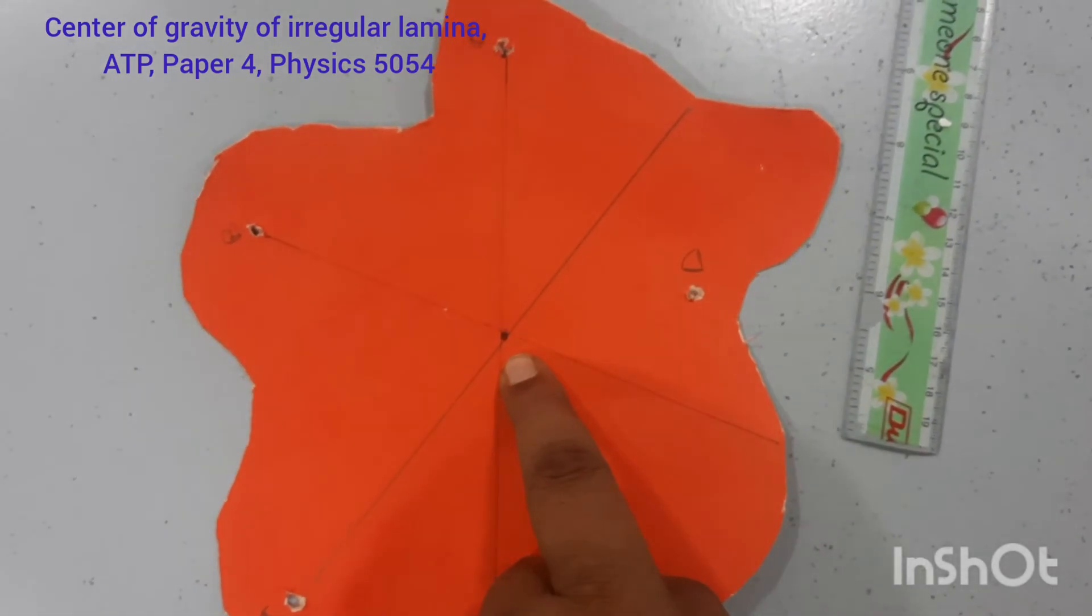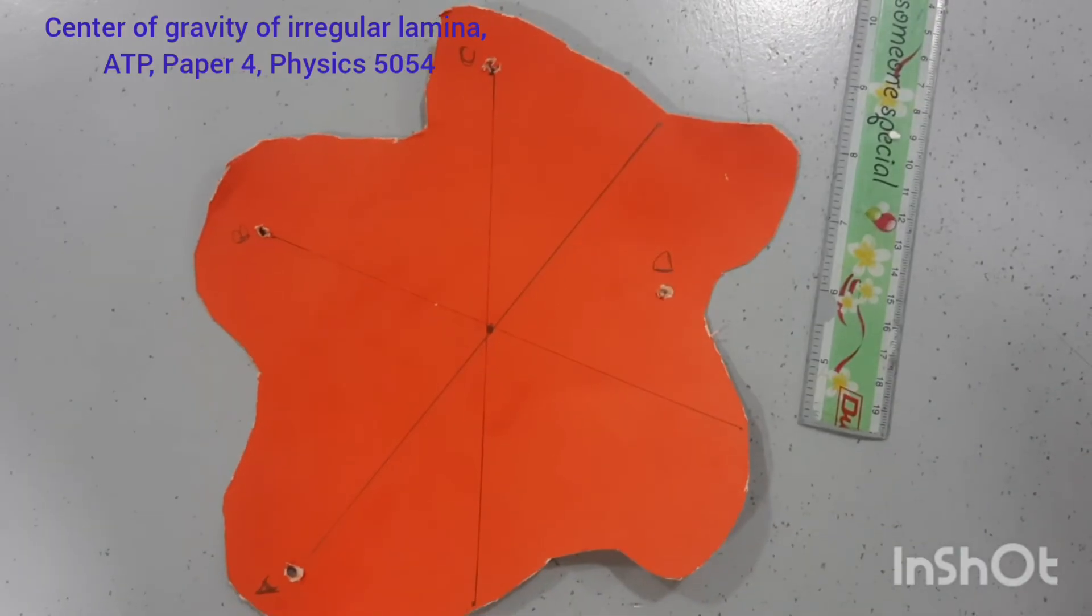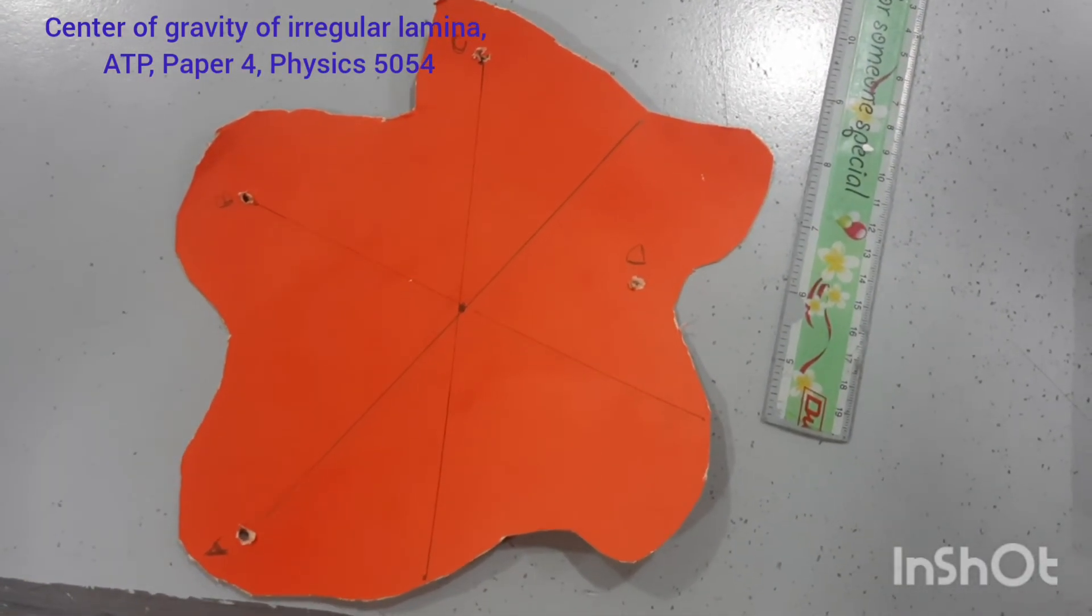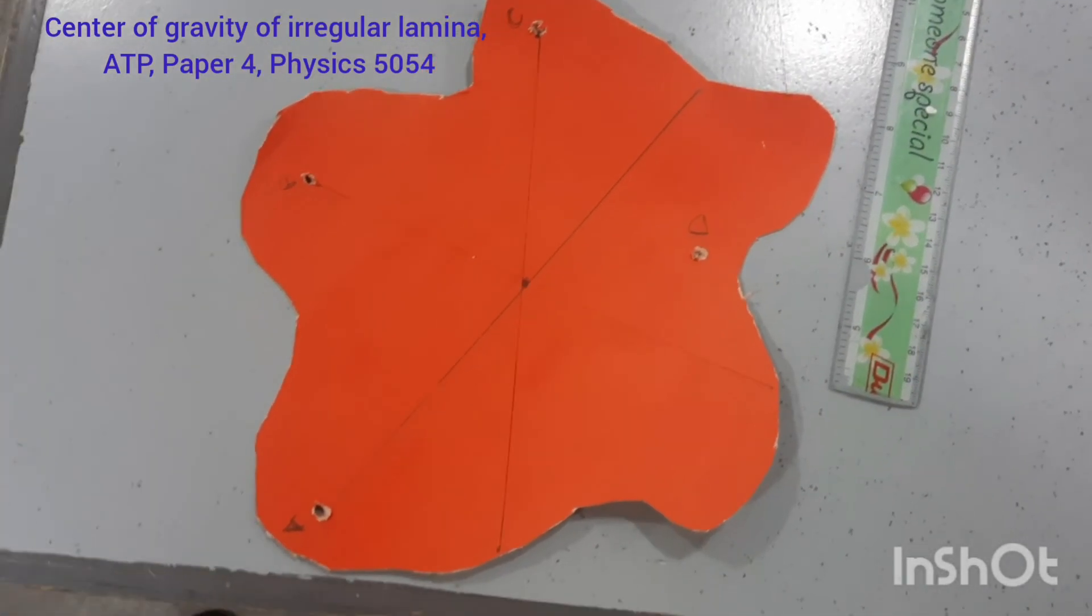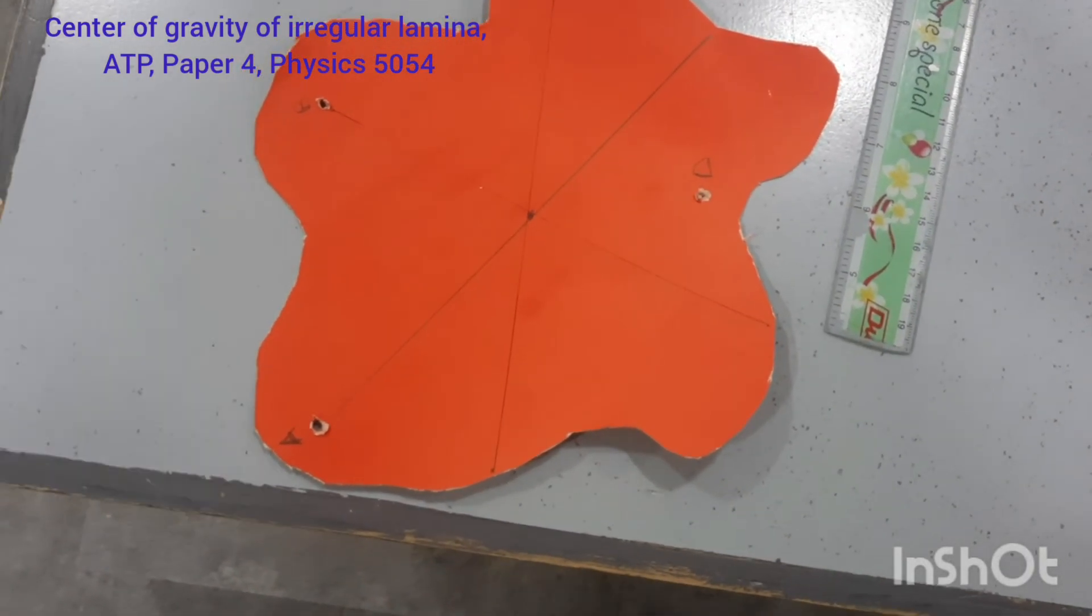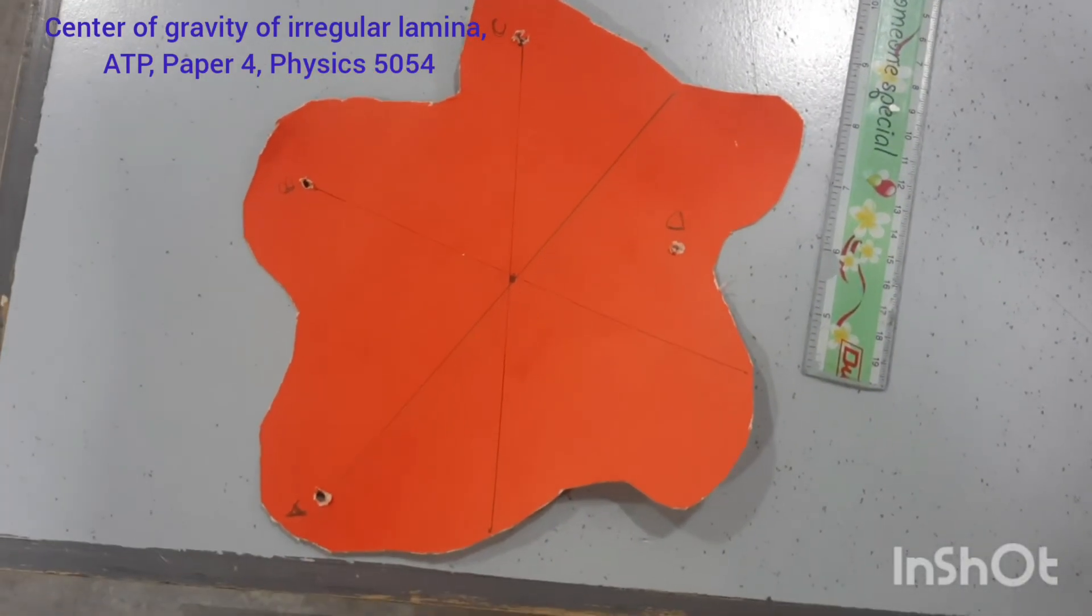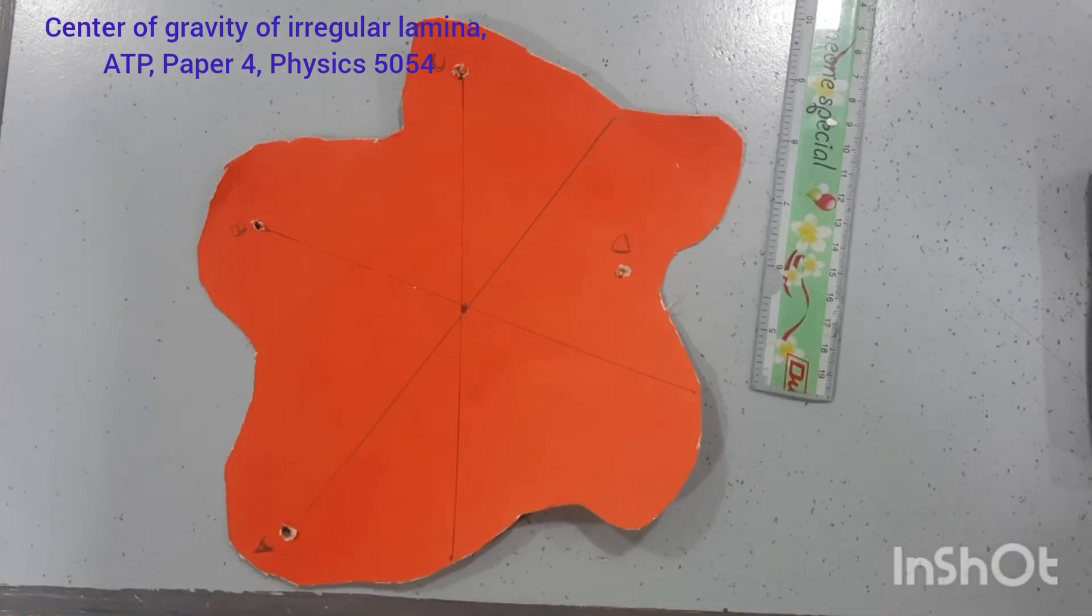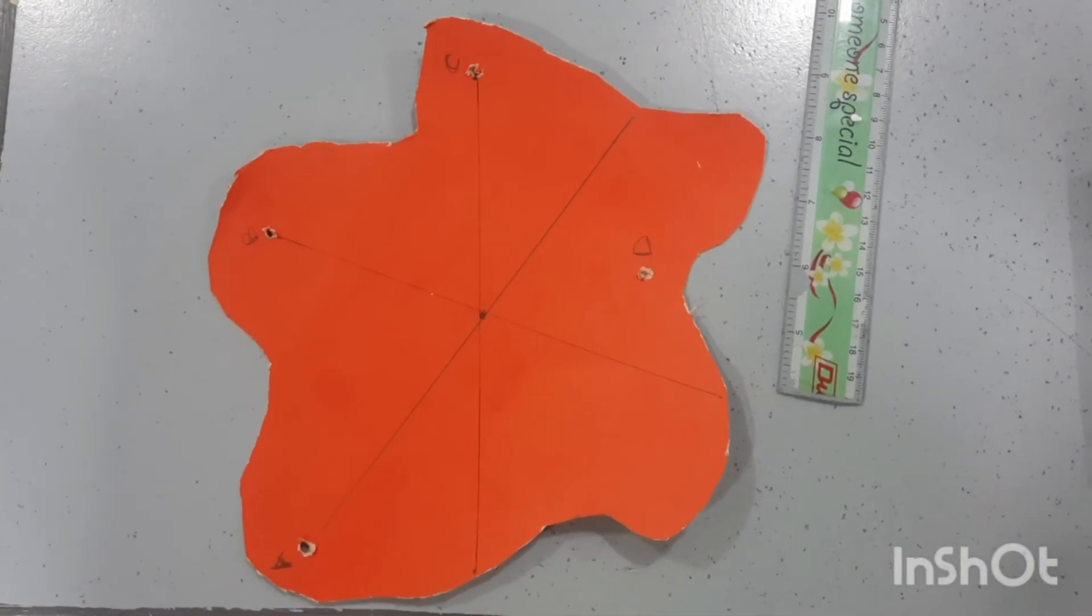So I hope you have understood that how we will find the center of the gravity of this irregular shaped lamina. And you have seen what the practical problems arises when you are performing this experiment. Hope this will help you to describe this experiment in your ATP paper. So thank you very much everyone. Have a good day. God bless you all. Bye.